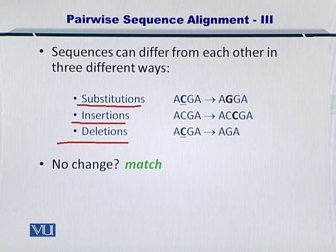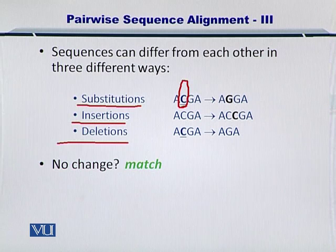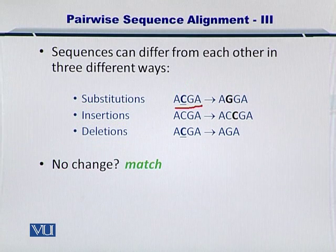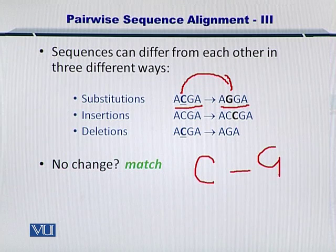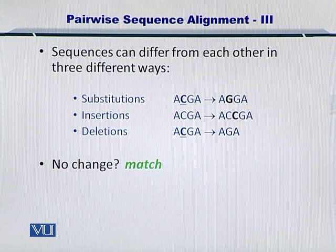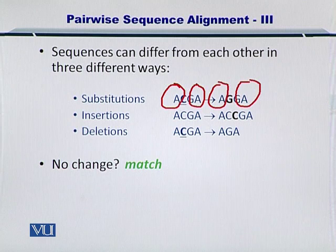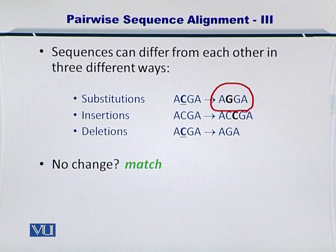If there are substitutions, then essentially, as you can see here, C has been replaced by a G. So the sequence ACGA has become AGGA. This substitution is actually a mismatch because C does not match G. The rest of the three nucleotides, AGA, are matching very nicely. So there is only one difference between these two sequences and this difference can be classified as a substitution.